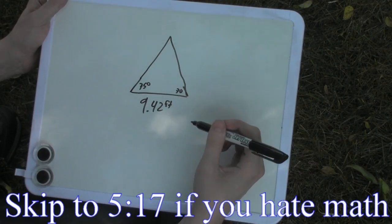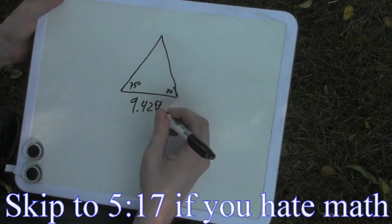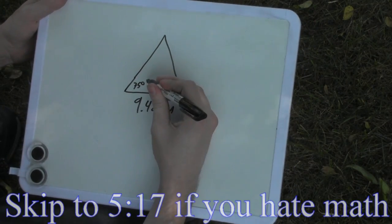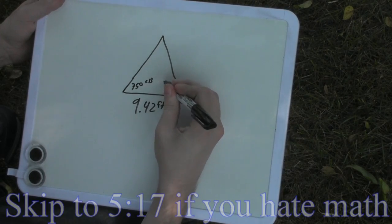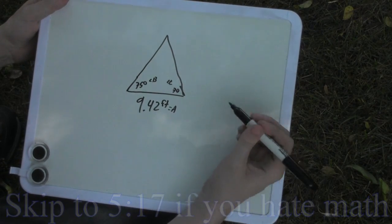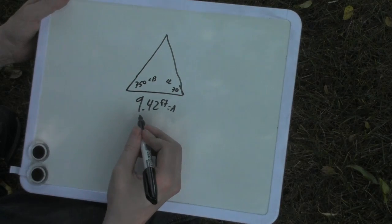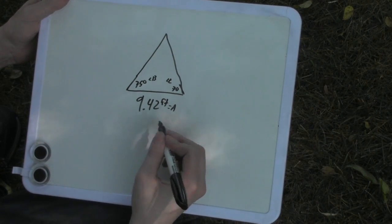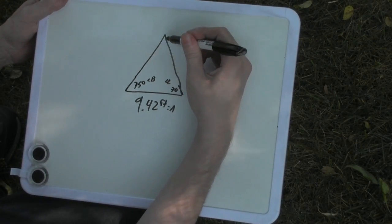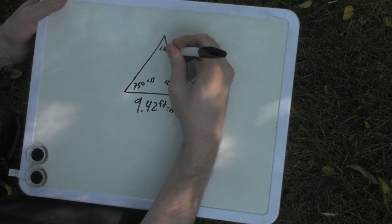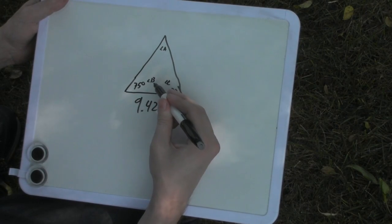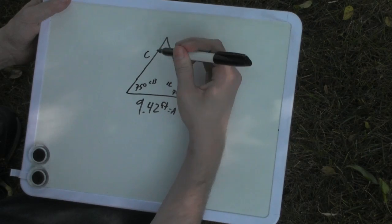Remember we called this side A, we called this angle B, and we called this angle C. Since this is side A, we can make the opposite angle, angle A. And same with angles B and C, we can make the opposite sides B and C.